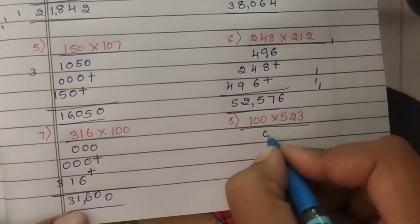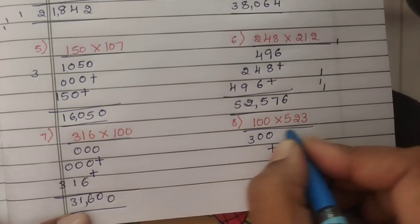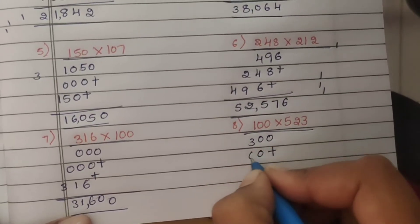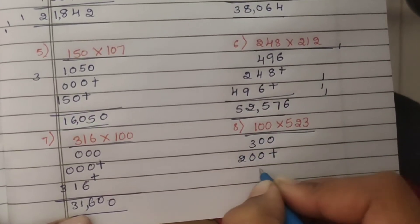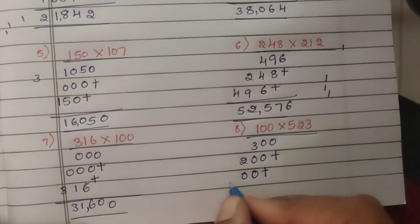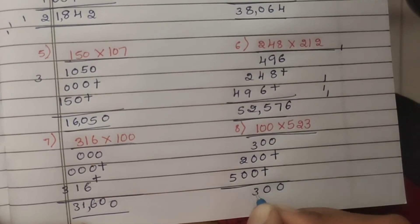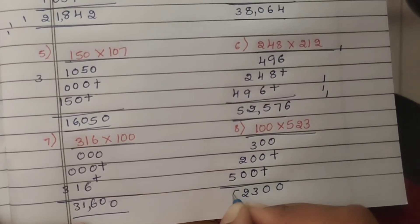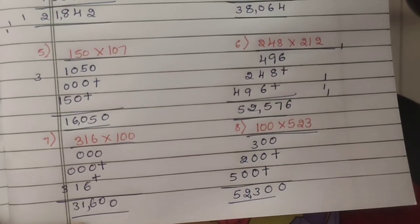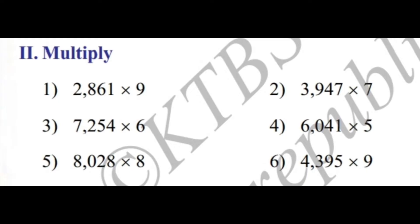Last problem of First Main: 100 into 523. 3 zeros are 0, 3 zeros are 0, 3 ones are 3. 2 zeros are 0, 2 zeros are 0, 2 ones are 2. 5 zeros are 0, 5 zeros are 0, 5 ones are 5. So we get 00325, answer: 52,300. That completes First Main. Now Second Main multiply.